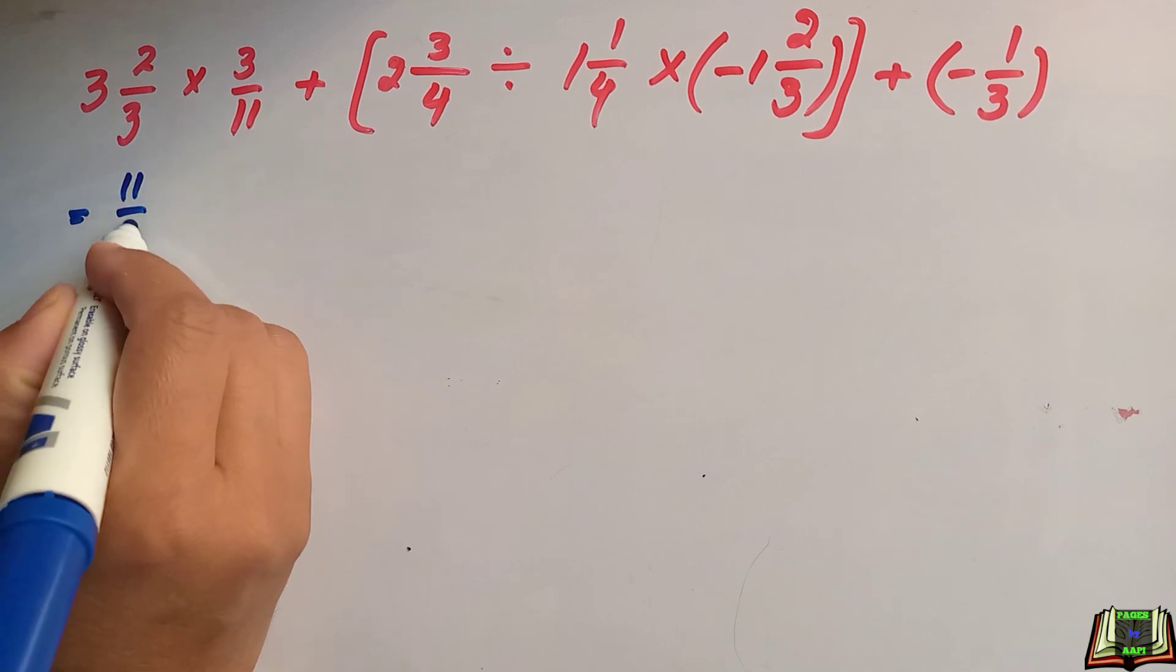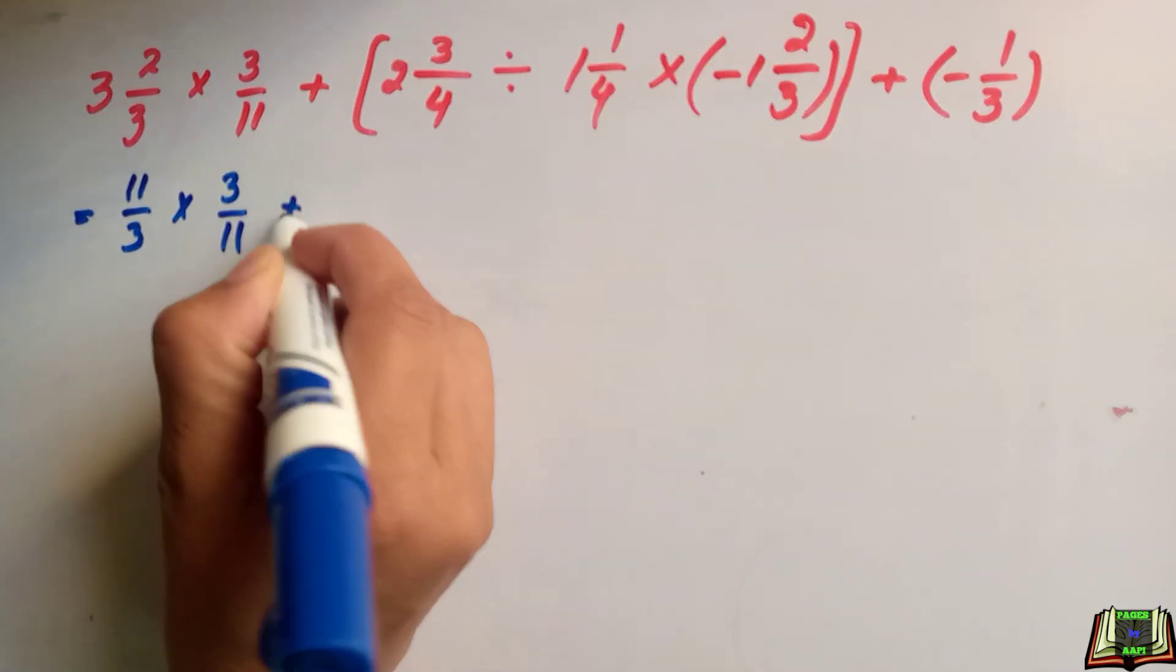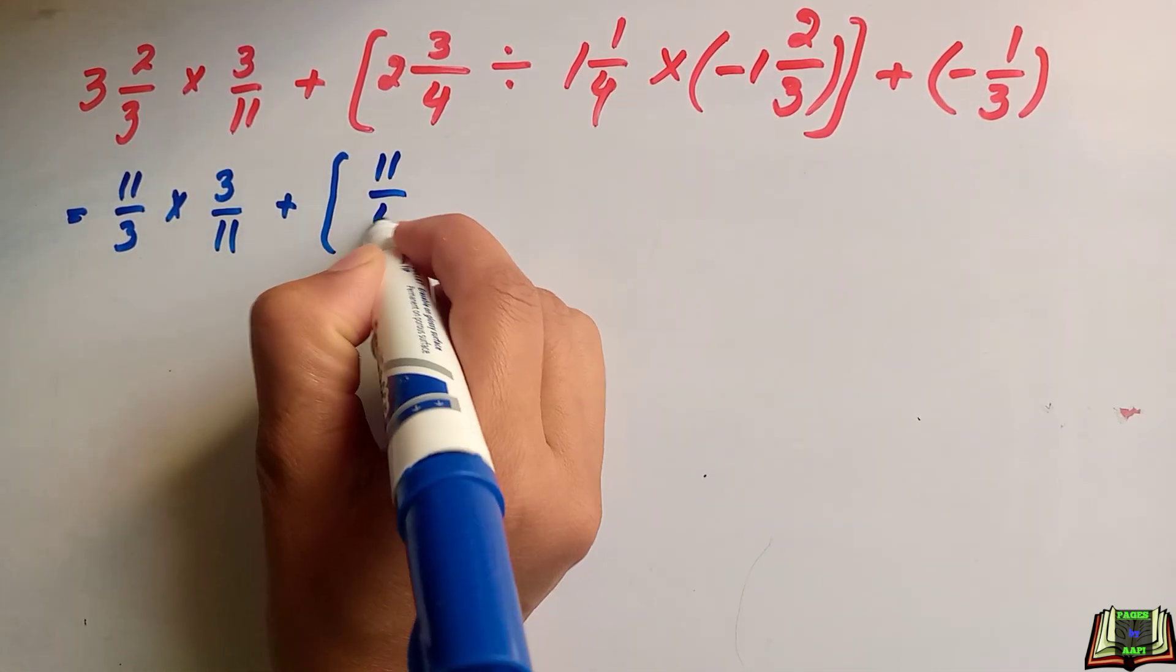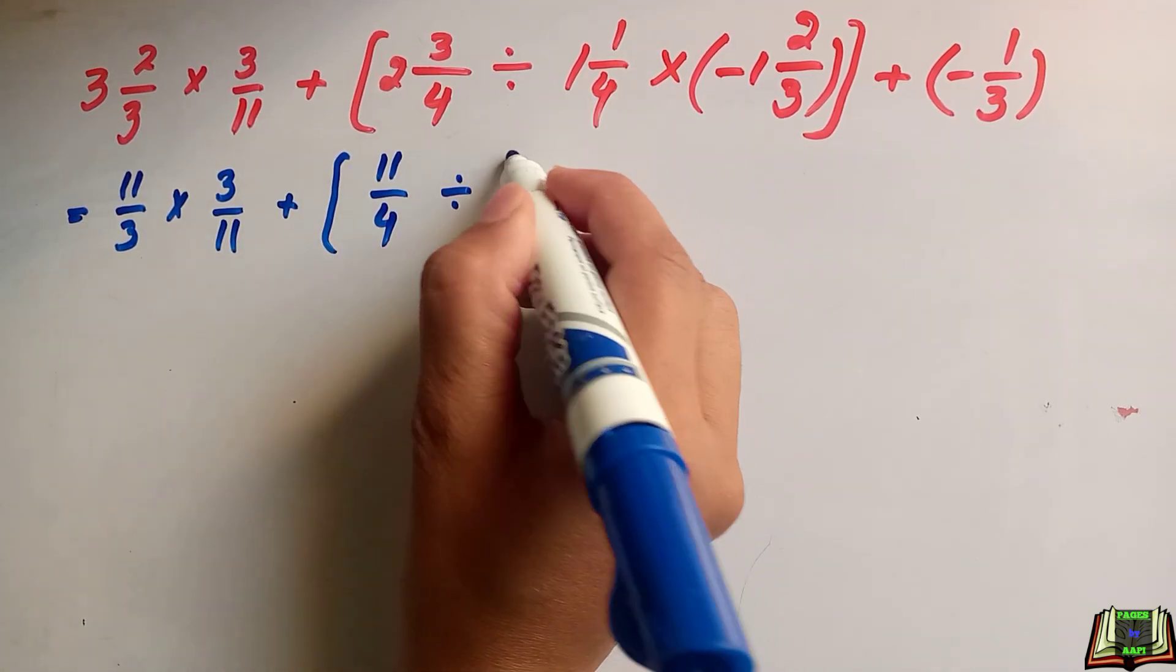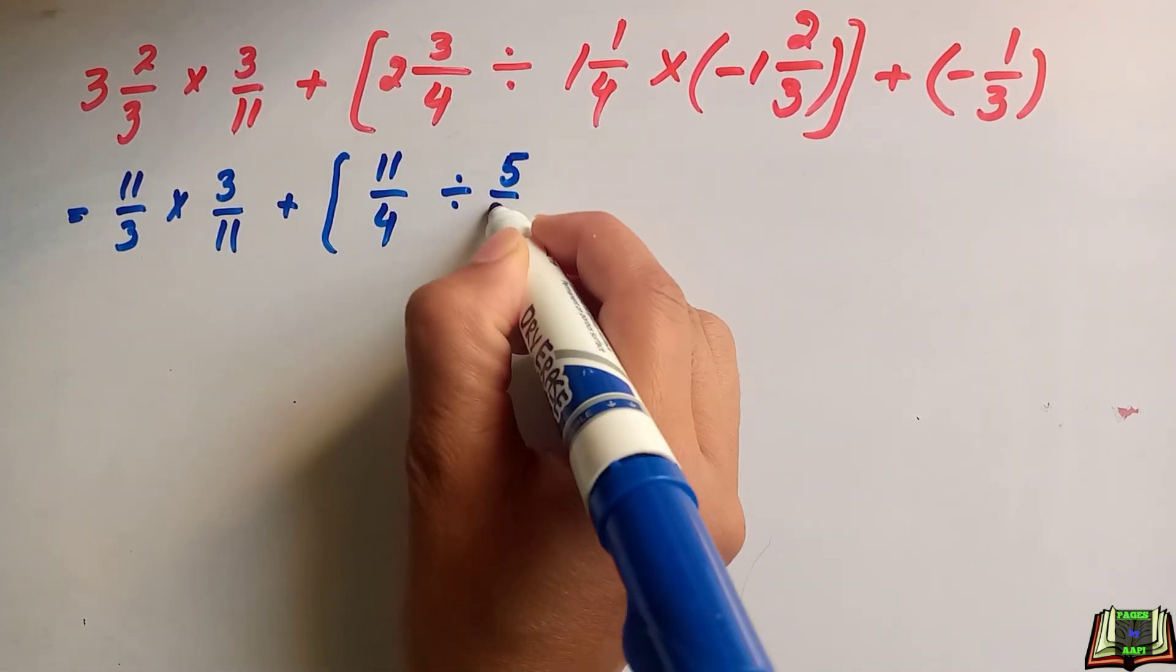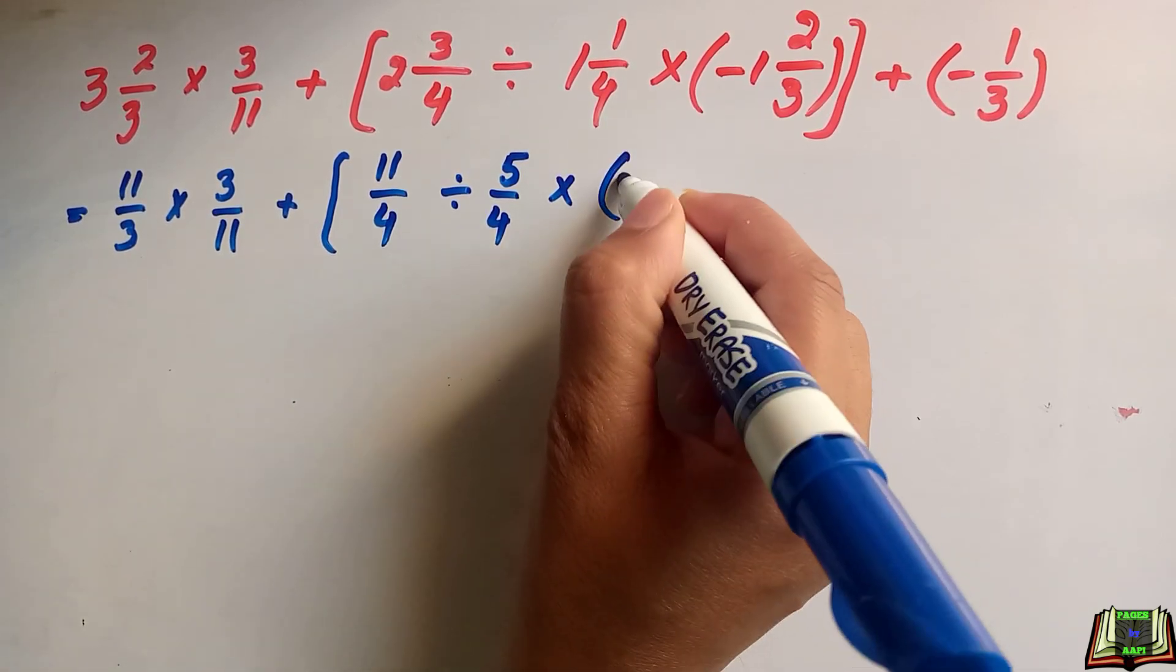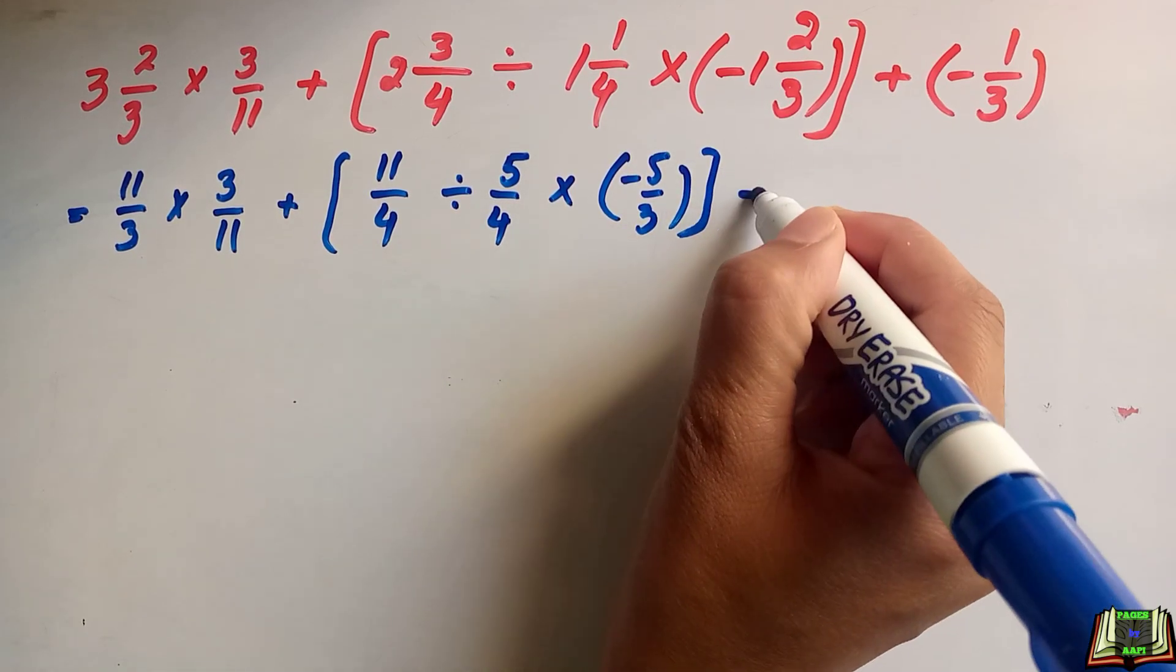Like: 3 times 3 is 9 and 2 is 11 over 3, multiply by 3 over 11, plus [square bracket] 4 times 2 is 8 and 3 is 11 over 4, divided by 4 times 1 is 4 and 1 is 5 over 4, multiply by minus sign as it is, minus 3 times 3 is 3 and 2 is 5 over 3 [square bracket close].